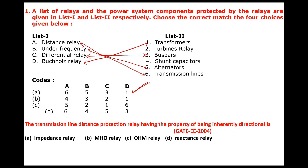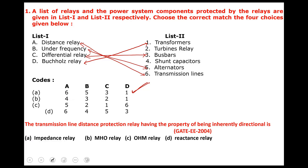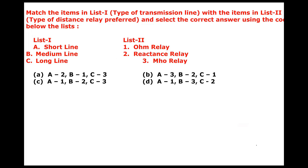The second question: in transmission line distance protection, which relay has an inherently directional feature? Mho relay is inherently directional. It is the only relay which is inherently directional, whereas all other relays — impedance relay, reactance relay, and ohm relay — are not inherently directional.